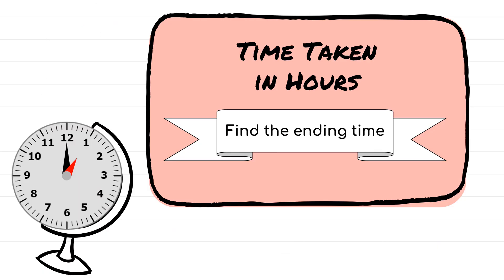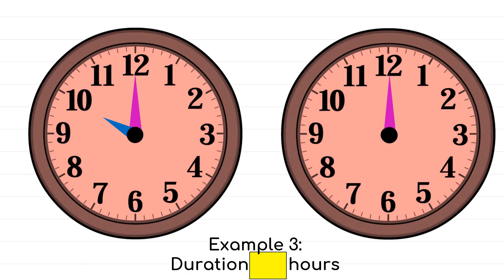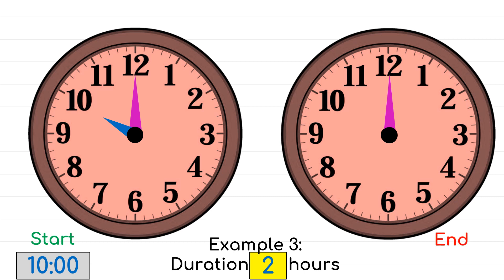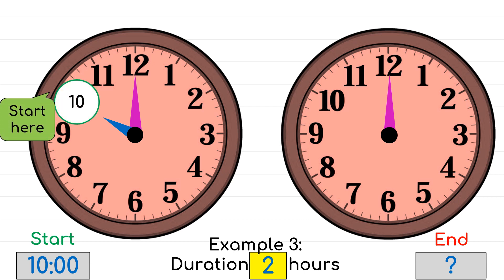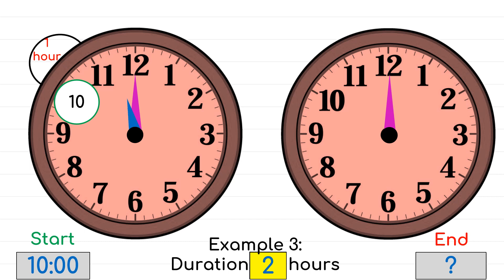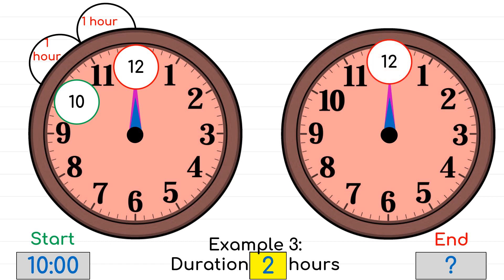In the next examples we're going to talk about how to find the ending time. We are given the starting time of 10 o'clock and a duration of 2 hours. Using hops, we start from 10 and hop 2 times — 1 and 2. Two hops means 2 hours and we have reached 12 o'clock. That is our ending time.